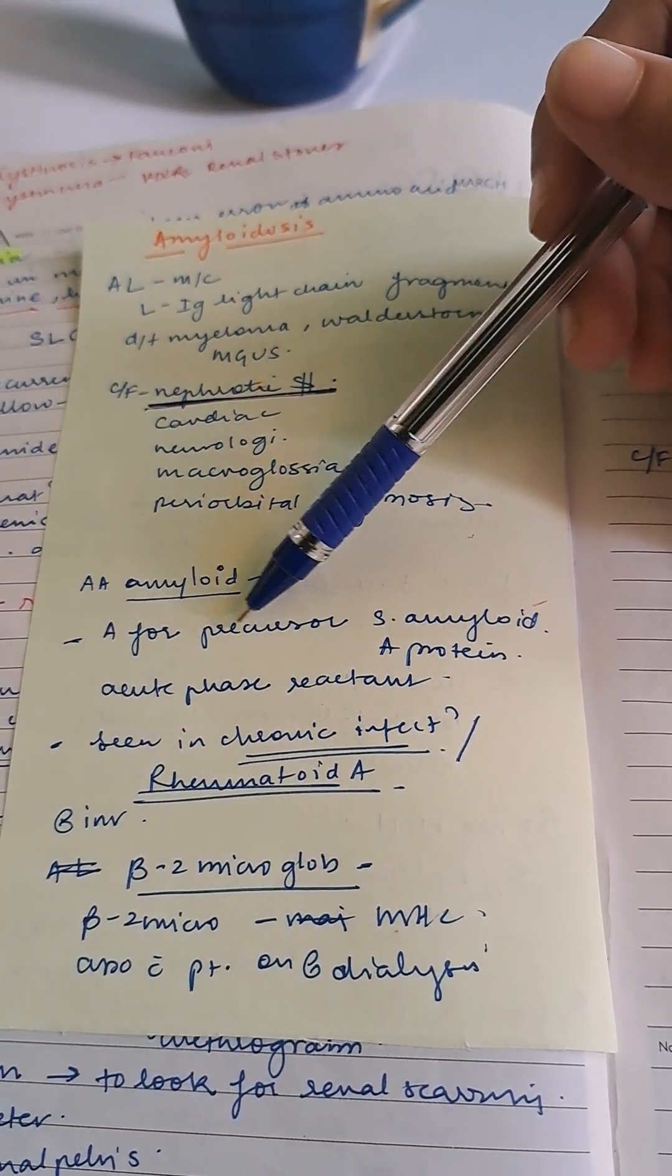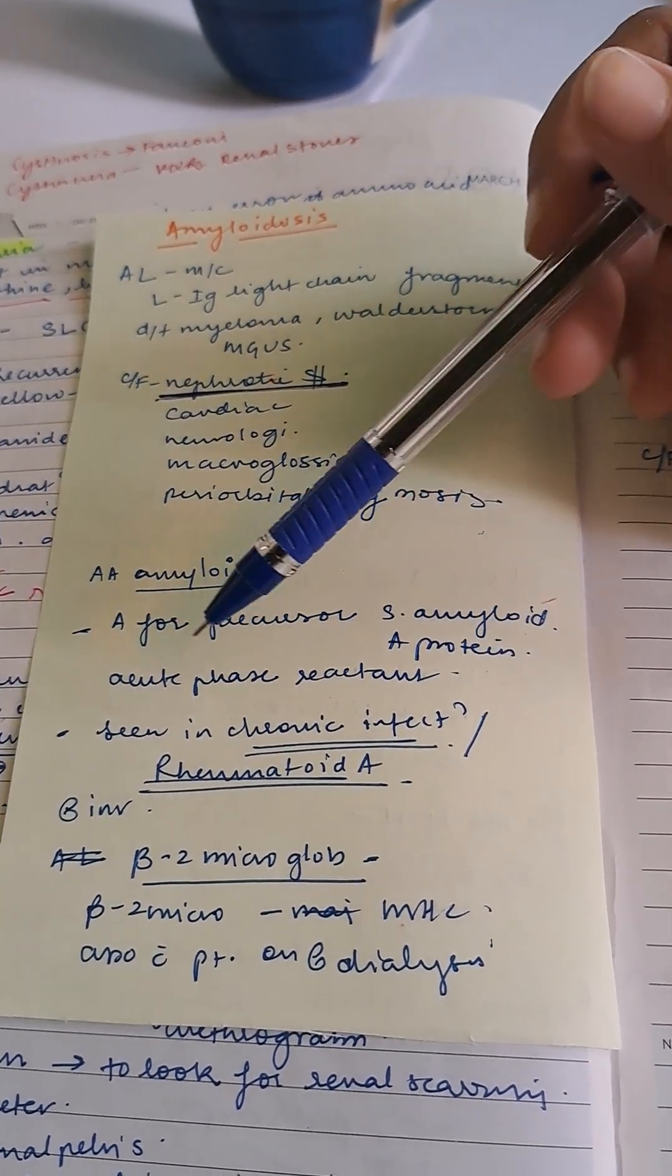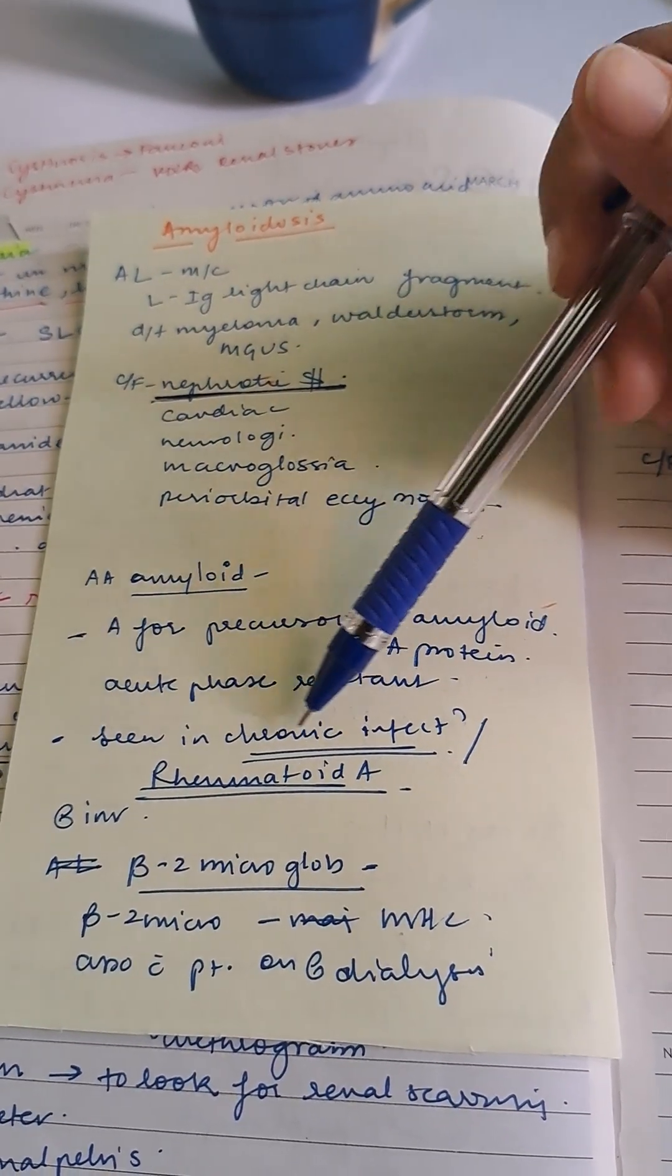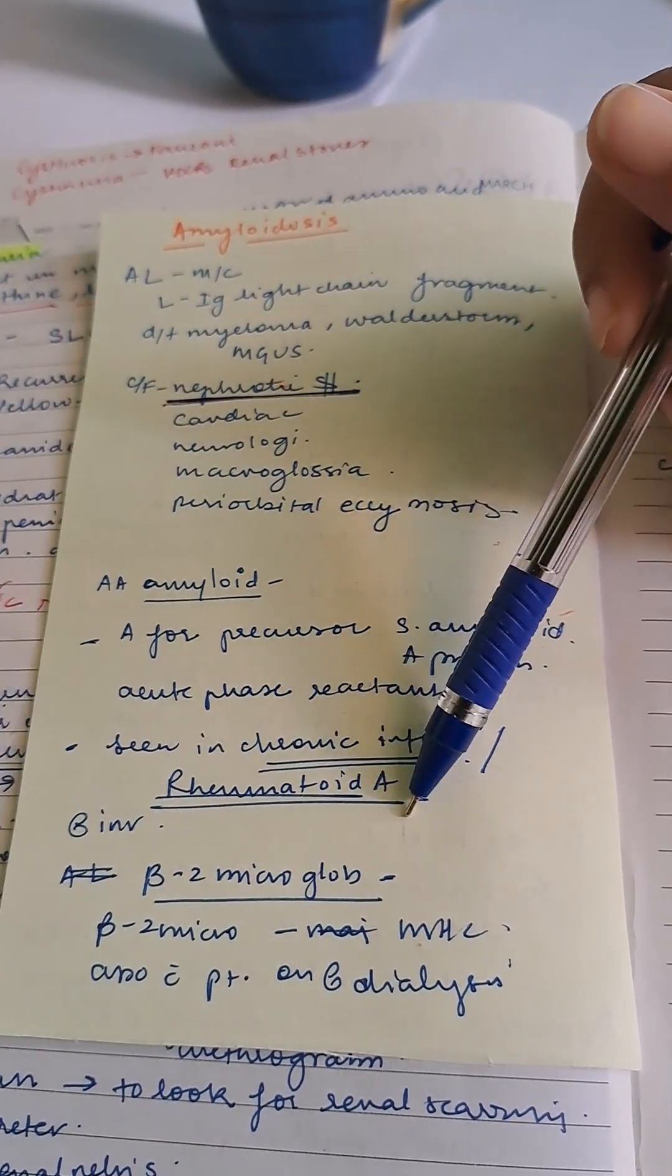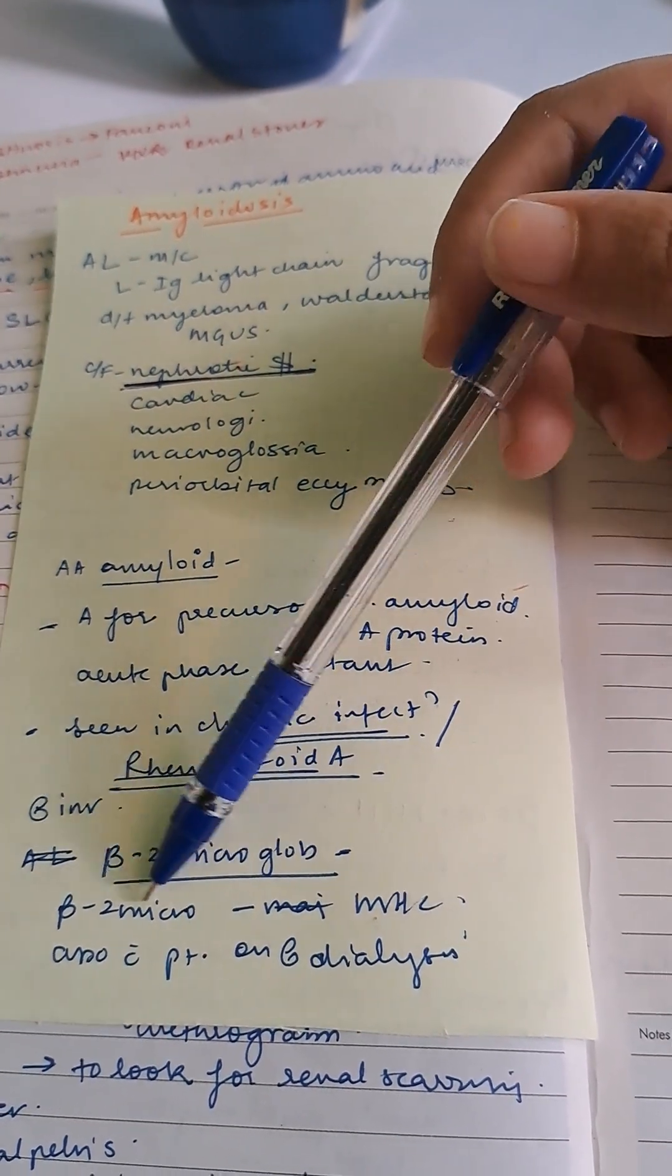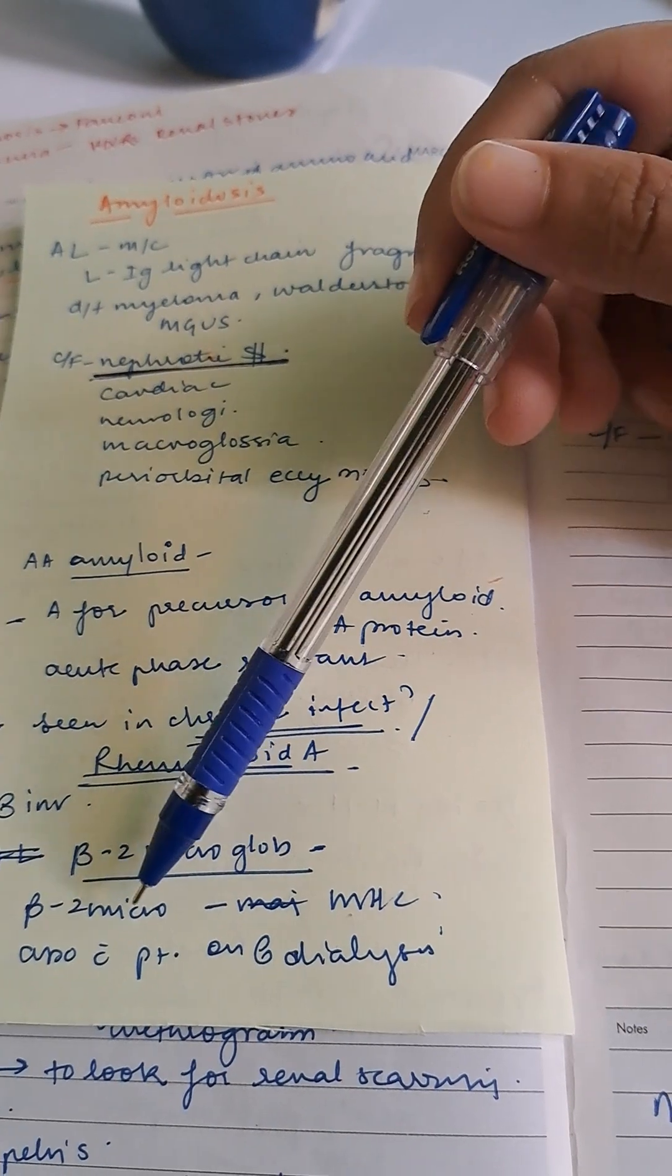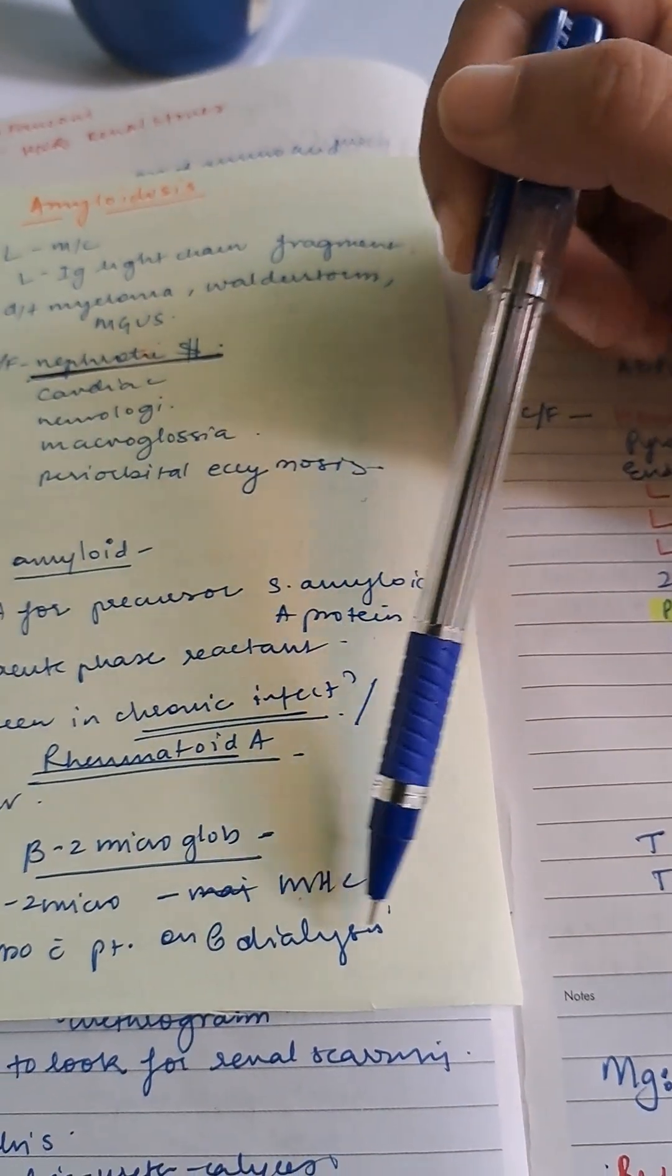AA amyloid—A is for precursor serum amyloid A protein, an acute phase reactant seen in chronic infection or rheumatoid arthritis. This causes renal involvement. Beta-2 microglobulin amyloidosis is MHC-associated with patients on renal dialysis.